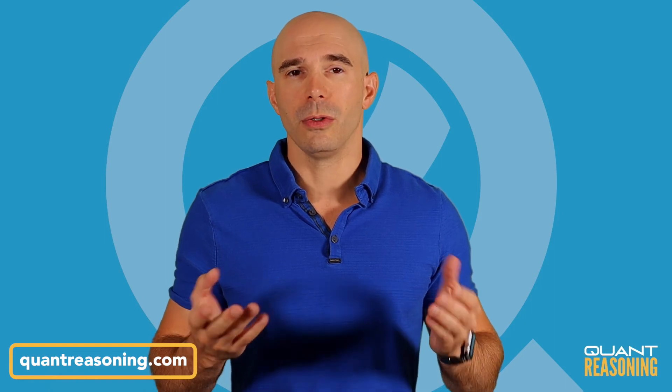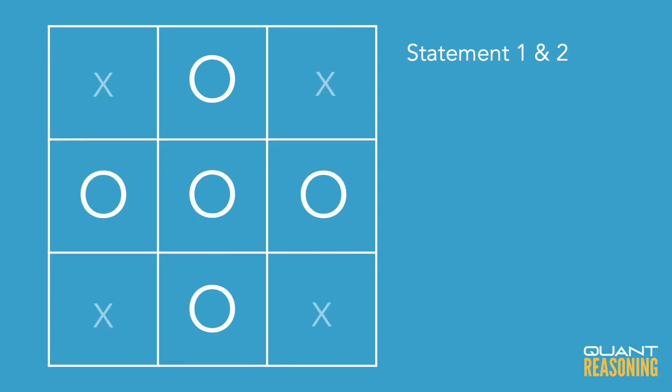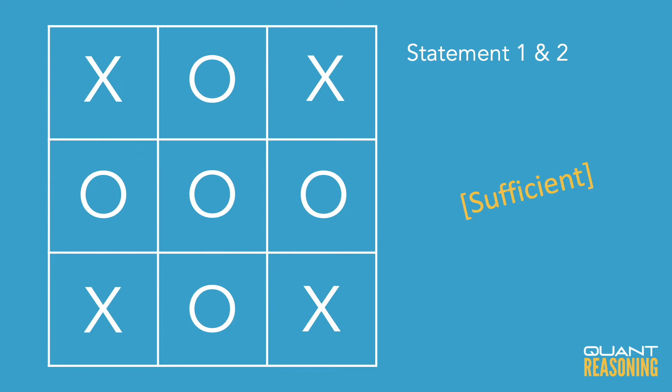Now if we combine these statements — from statement one we know there are at most four X's, and from statement two we know there are at least four X's. Well if both of those statements are telling the truth, and they are, then there must be exactly four X's. So when we combine the statements we can answer the question, and therefore the answer is C.